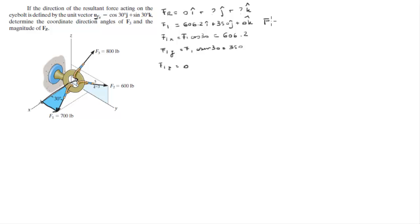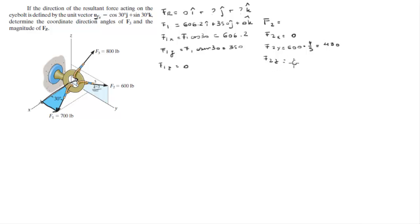Now let's find F2. F2 has an x, a y component, and a z component. The x component is 0 — it has no x component. The y component is 600 times 4/5, which we get from the triangle, giving 480. The z component is 600 times 3/5, which is 360, from that same triangle. So F2 equals 0i + 480j + 360k.